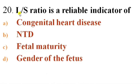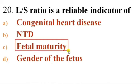Next question: The Lecithin-Sphingomyelin (L/S) ratio is a reliable indicator of — Options: A) Congenital heart disease, B) Neural tube defect, C) Fetal maturity, D) Gender of the fetus. Answer is C — Fetal maturity. The L/S ratio is the ratio of lecithin to sphingomyelin in the amniotic fluid, used to assess fetal lung maturity. Until about the 34th week of gestation, the lungs produce less lecithin than sphingomyelin. As the fetal lungs mature, more lecithin is produced, and in a mature fetus the L/S ratio will be 2:1.